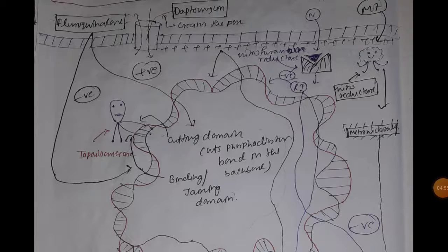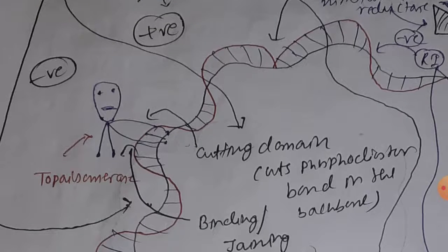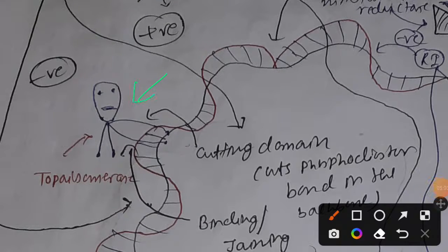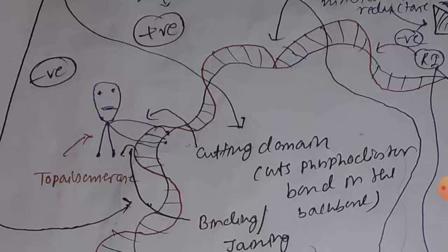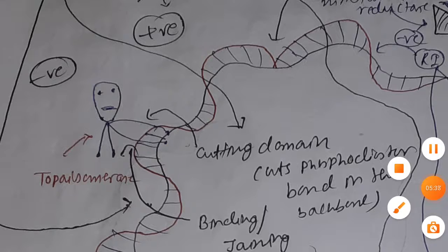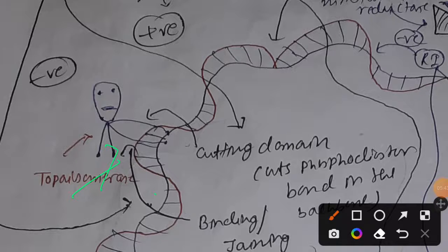Topoisomerase has two kinds of activity: a cutting domain and a joining or binding domain. First, topoisomerase activates its cutting domain, which cuts some of the phosphodiester bonds, allowing the DNA to relieve some of the stress or tension created at the supercoiled region. Once this tension is removed, the binding or joining domain is activated, and it recreates the phosphodiester bond, converting the DNA back to fully sealed double-stranded DNA.